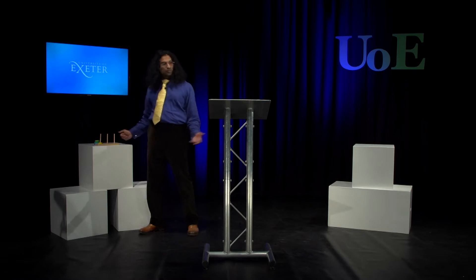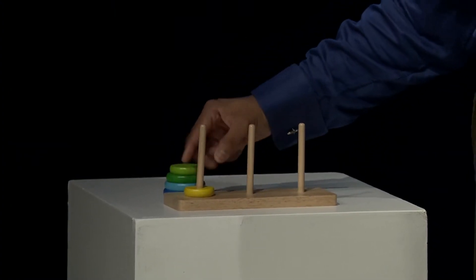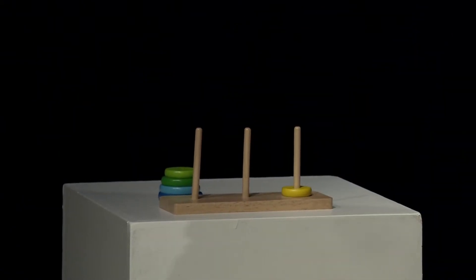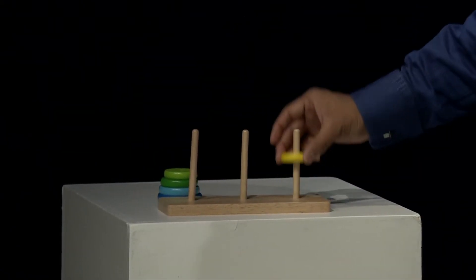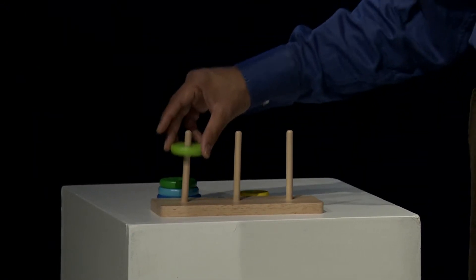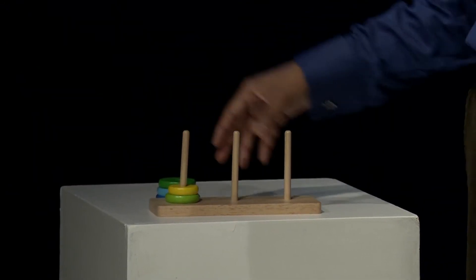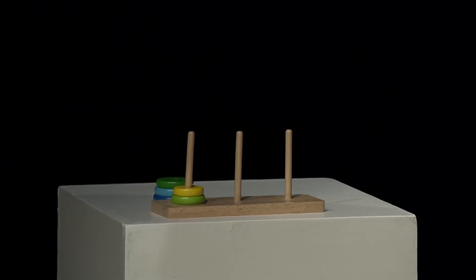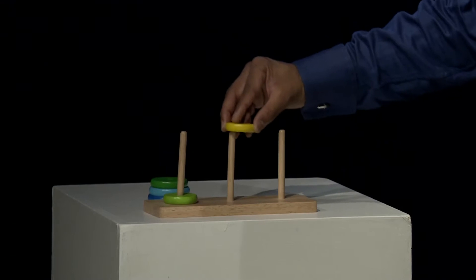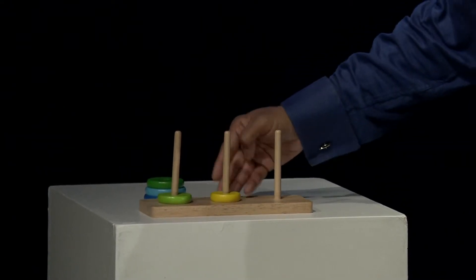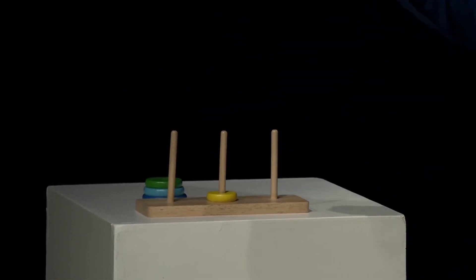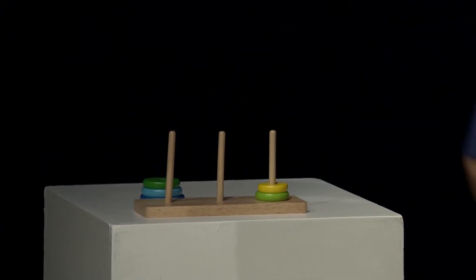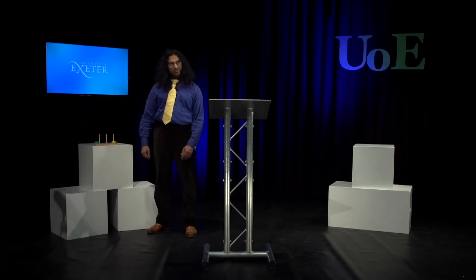If I just had one disk, this yellow disk, to move it from peg one to peg three takes just one move. What if I have two disks? The simplest way is to move the smallest disk to the middle peg, then this green disk to peg three, and move the smallest disk on top. So that's taken three moves.